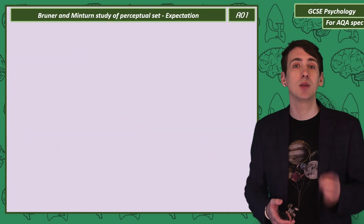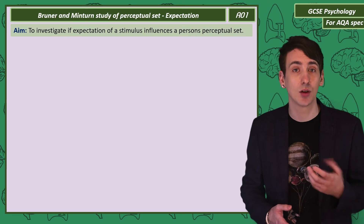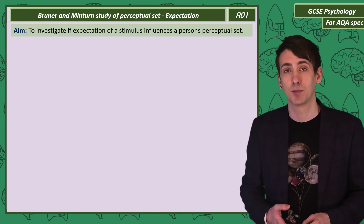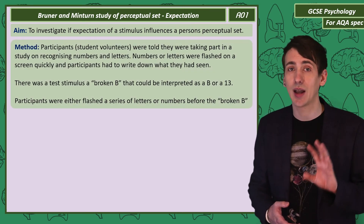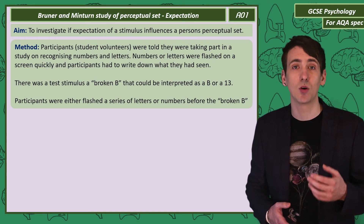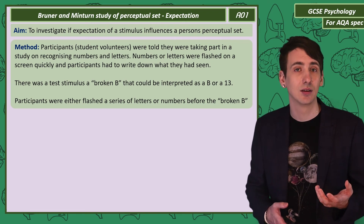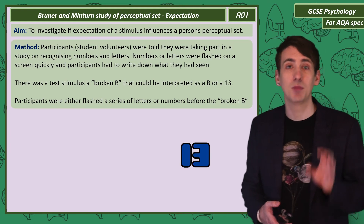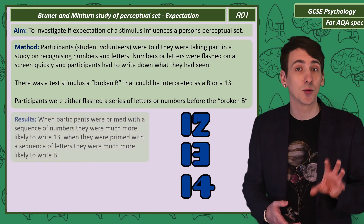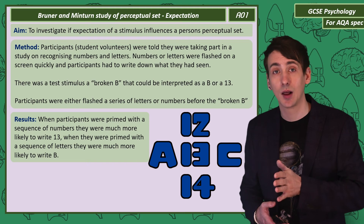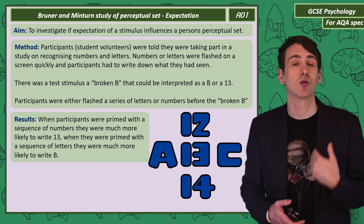Our next study is Brunner and Minton's study of perceptual set. They investigated if the expectation of a particular stimulus would alter the perception of that stimulus. Participants were told they were taking part in a study on recognising numbers and letters. The researchers flashed a series of numbers or letters onto a screen and participants had to write down what they had seen. There was a test stimulus — a broken B — which could be interpreted either as a B or as a 13. When primed with a series of numbers, participants were more likely to write down 13. When flashed with a series of letters, they were more likely to write down a B.